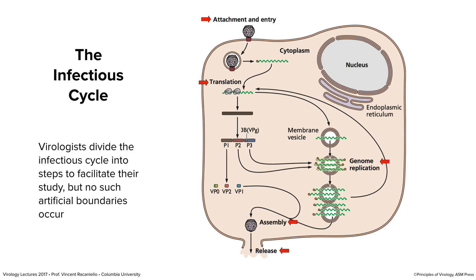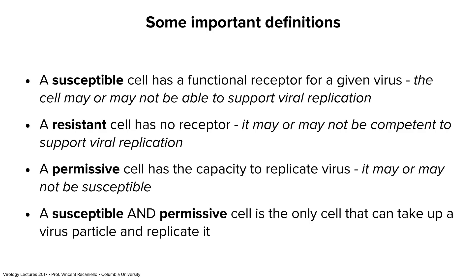Those are the general steps of an infectious cycle or replication cycle, and one of the goals of virology is to understand what happens at each one. This is for an RNA virus; for other viruses the details will be different. For example, some viruses will replicate their genomes in the nucleus. Essentially, the infectious cycle is what happens in a cell when a virus gets in and eventually leaves. The first half of this course — roughly 12 lectures — we're going to devote to understanding what goes on in the infectious cycle. Then we'll step back and look at what happens in a host when a virus gets into an animal, which we'll cover in the last half of the course.